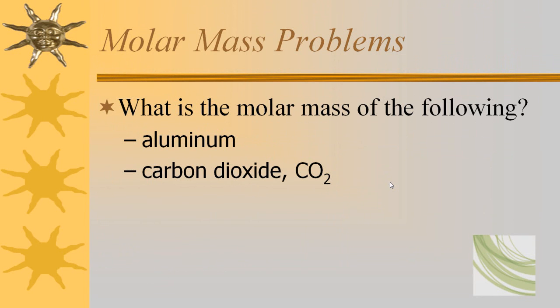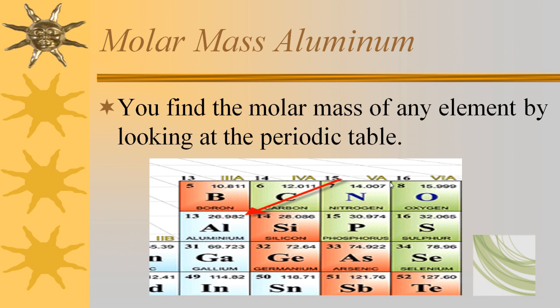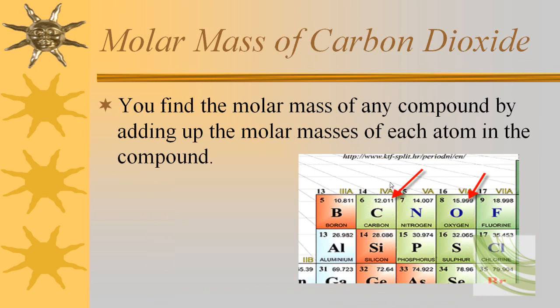Let's do a little bit more practice. What is the molar mass of the following: aluminum and carbon dioxide? Of course, aluminum is pretty easy to find. Remember that you find the molar mass of any element by looking at the periodic table. Aluminum's molar mass is 26.982 — pretty simple. Carbon dioxide is a compound, so we have to do a little bit more work.